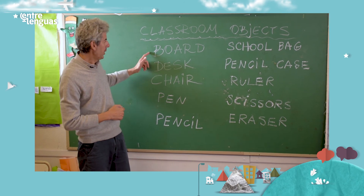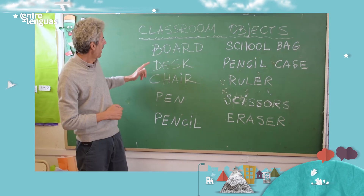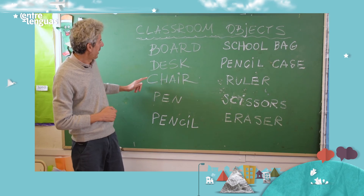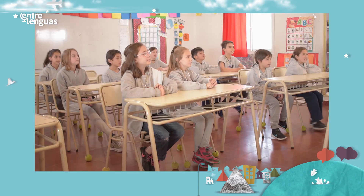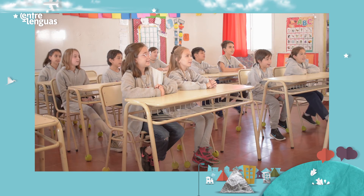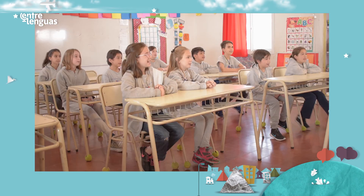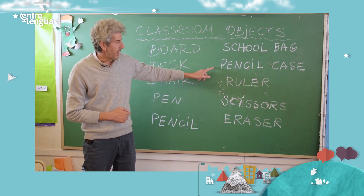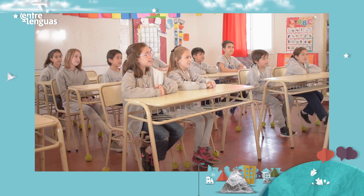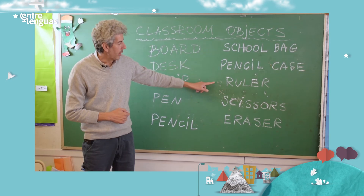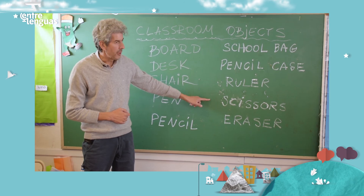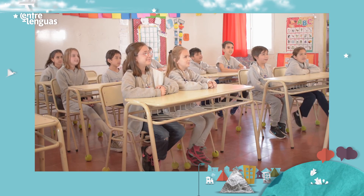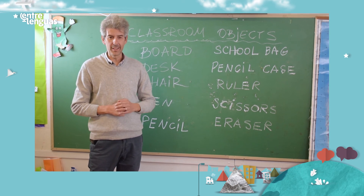Now let's say the school objects together: board, desk, chair, pen, pencil, school bag, pencil case, ruler, scissors, eraser. Very good, well done kids!